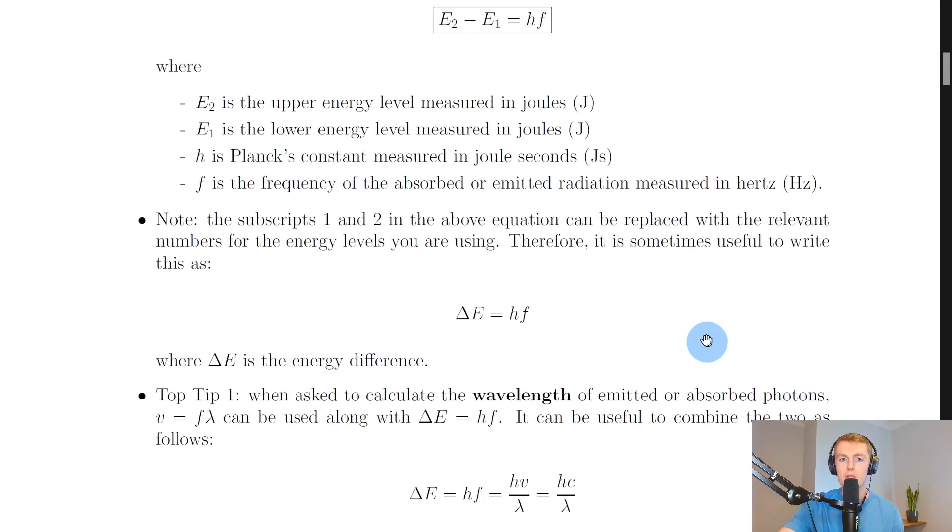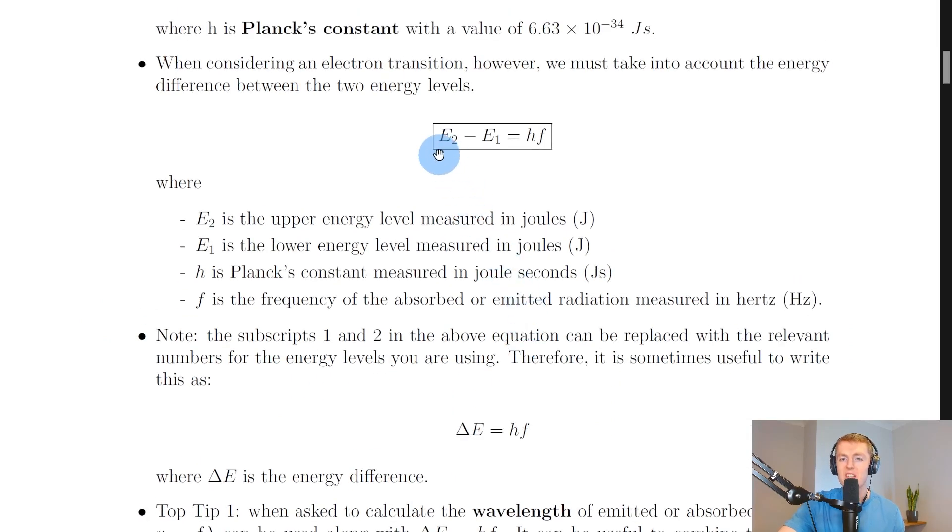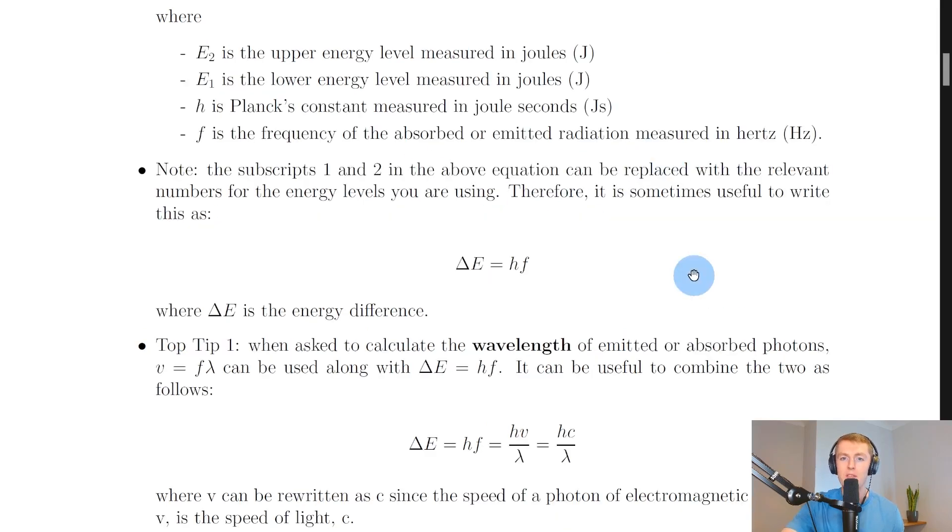Note the subscripts 1 and 2 in the above equation can be replaced with the relevant numbers for the energy levels you are using. It doesn't necessarily need to be E2 minus E1, that's just a general form. If you were using energy levels E1 and E3 then you would have E3 minus E1 equals hf. Or if you were using energy levels E4 and E2 for example then you would have E4 minus E2 equals hf.